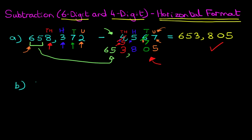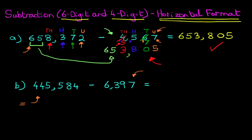This time we have 445,584 minus 6,397. Following the same principles as above, we're going to add a number to the smaller number so that it equals the larger number.